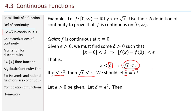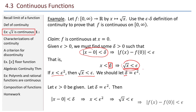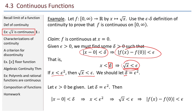Here begins the proof proper. Let epsilon greater than zero be given. Let delta equal epsilon squared. Then absolute value of X minus zero less than delta implies X is less than epsilon squared, which implies square root of X is less than epsilon, which implies absolute value of F of X minus F of zero is less than epsilon. We have shown that F is continuous at X equals zero.